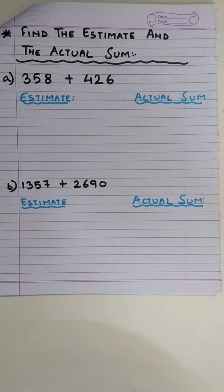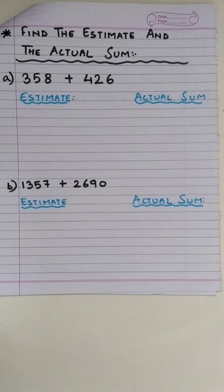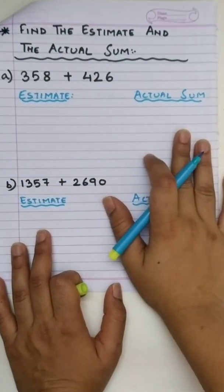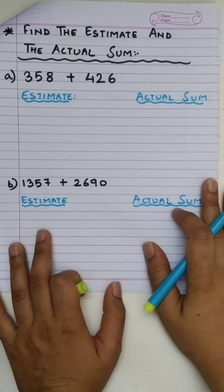Rounding of the numbers make the addition very easy and we get the estimation which is very close to the actual sum. Let's check. Okay! Now, first of all let's go for actual sum which you already know how to find.